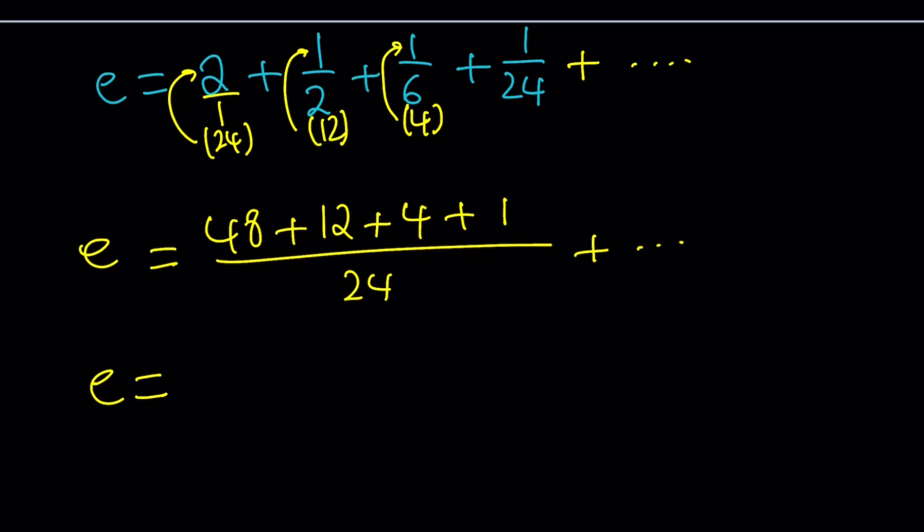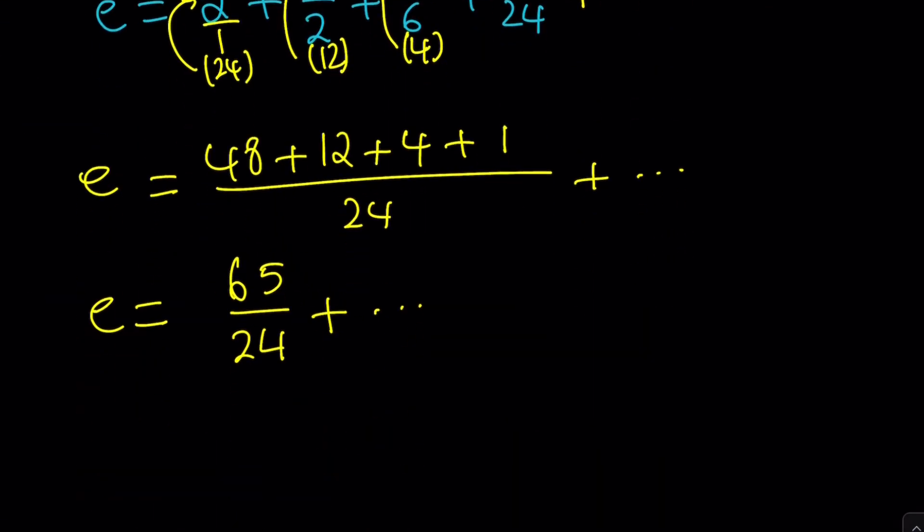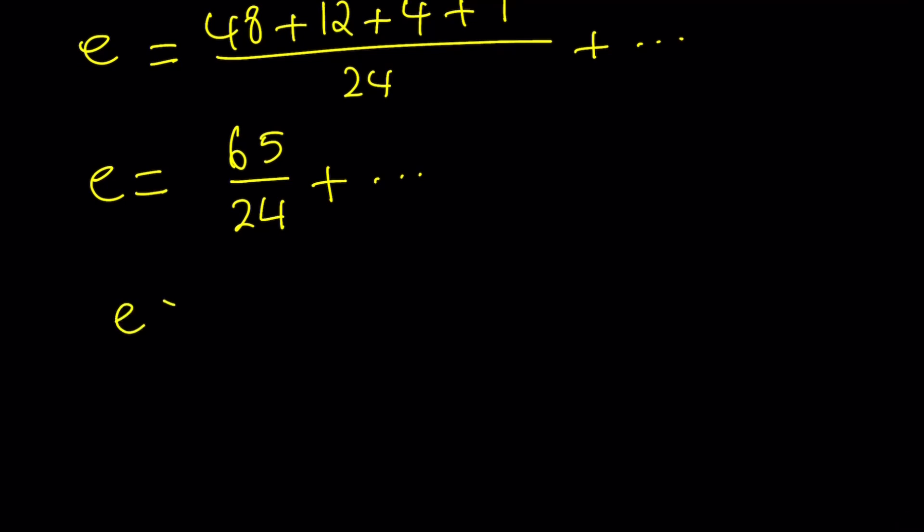So we got that e is 65 over 24 plus infinitely many other terms. But one thing I want you to notice is that all these terms are positive. Because there's a plus sign between them, and they're all factorials or reciprocals of factorials. They're all positive. So this means that e is greater than 65 over 24 because it's 65 over 24 plus infinitely many positive terms. So it has to be greater than 65 over 24.